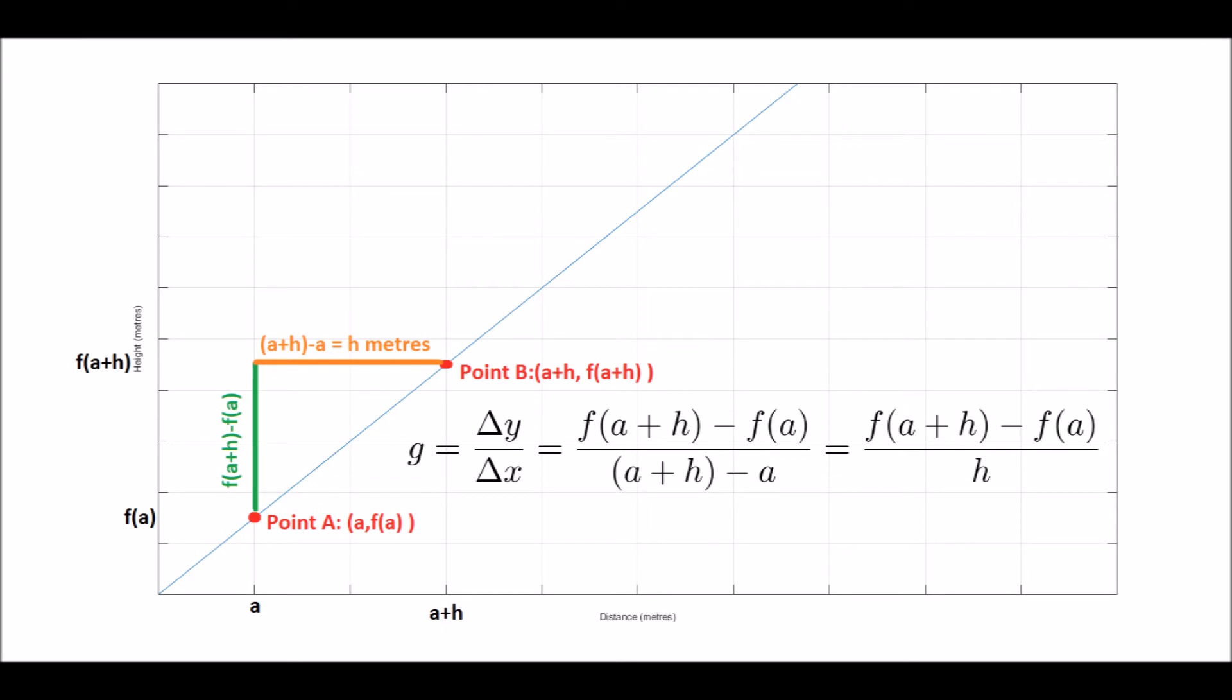Now this line is just a function that takes the value of distance and outputs the value of height. So we'll denote it f, a function, and say f(x) is the height at point x. So the change in height, which we'll denote as delta y, is simply f, the distance at point B, minus f, the distance at point A, which is f(a+h) minus f(a). So now the gradient, the change in y over the change in x, is given by this.